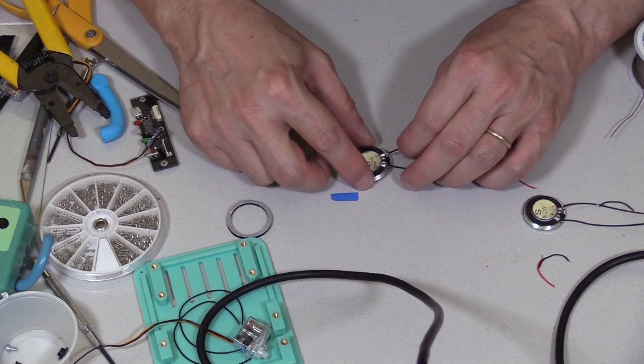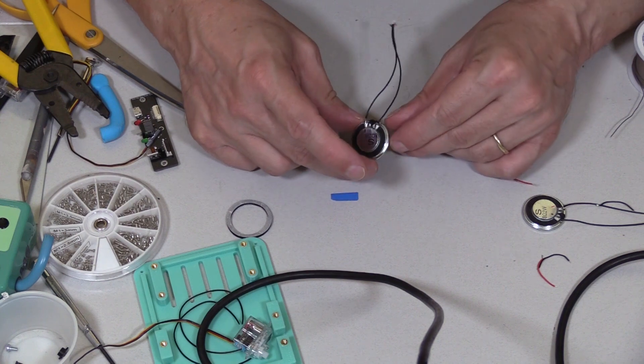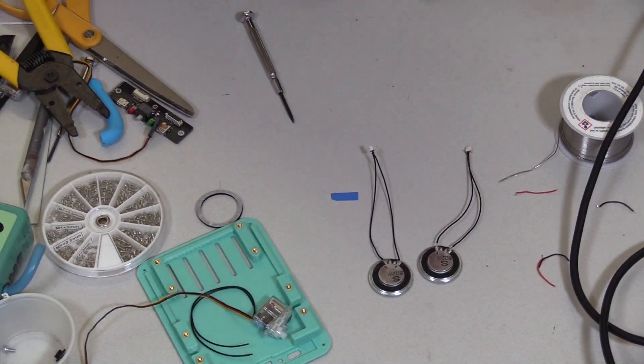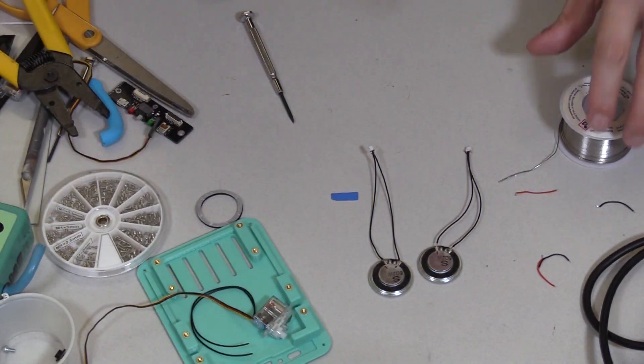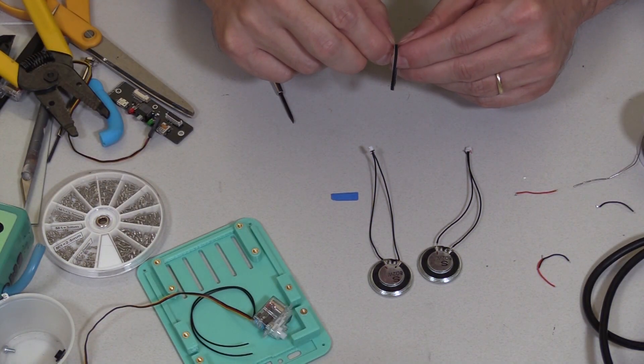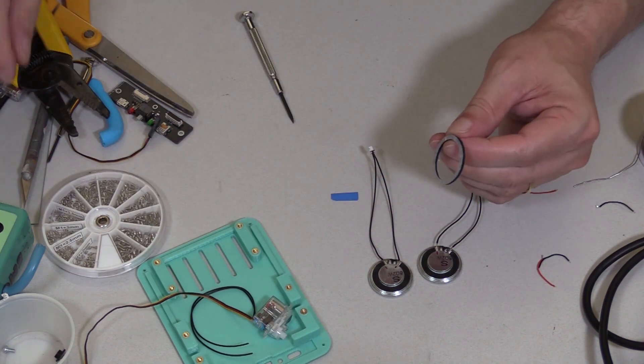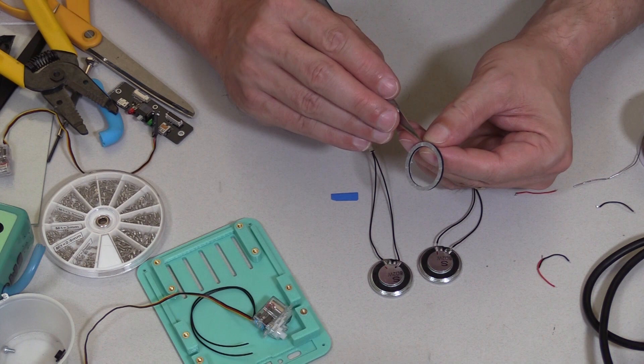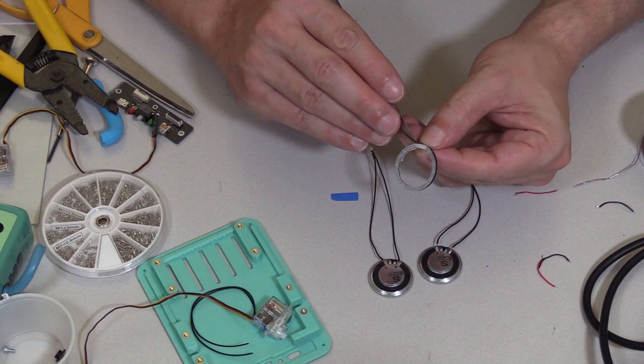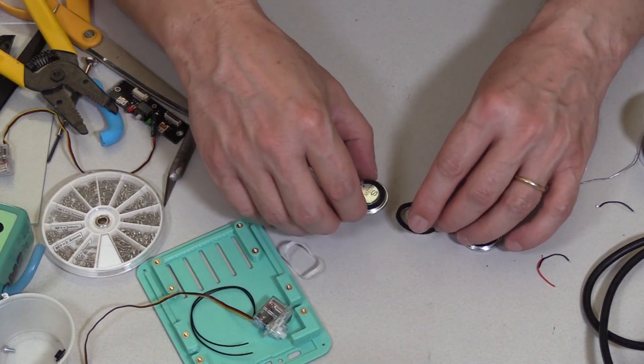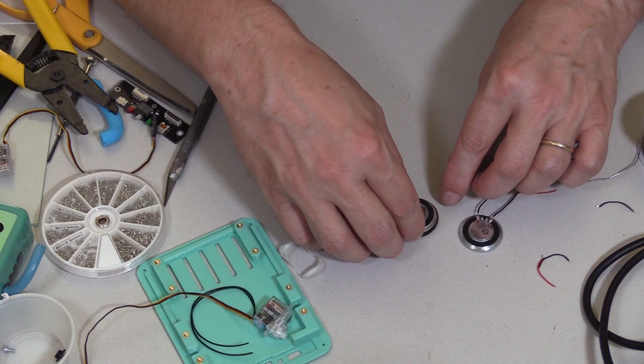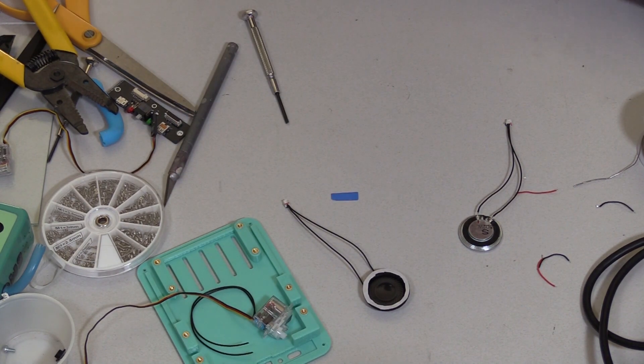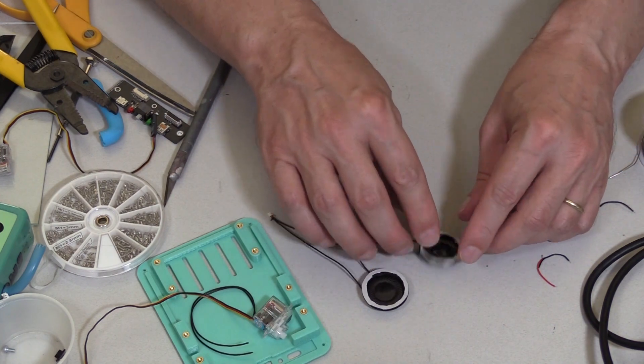Let's do this one. And if you wanted to make that super secure, you can add a dot of hot glue or something. There we go, we got 2 speakers done. And then what I'm going to do is put this little foam sticker on there. There we go, a self-adhesive speaker.